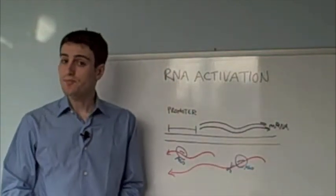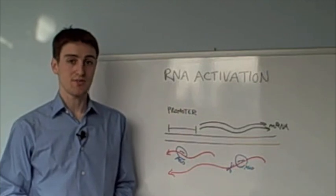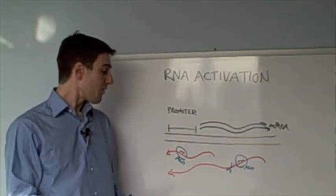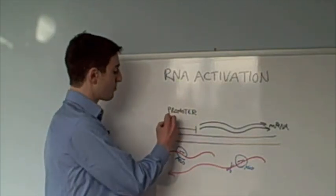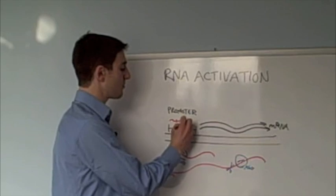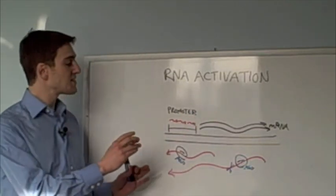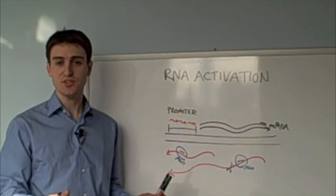In the third model, proposed by Robert Place and Long Cheng Li from the University of California, San Francisco, they also are targeting non-coding RNA transcripts, except they propose that they're targeting little tiny ones in the vicinity of the promoter, actually in the same orientation as the mRNA, or they call these sense transcripts.